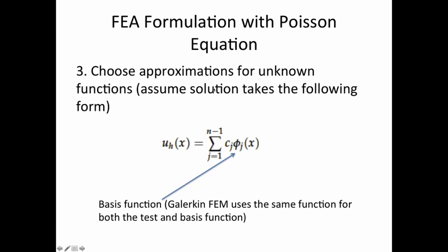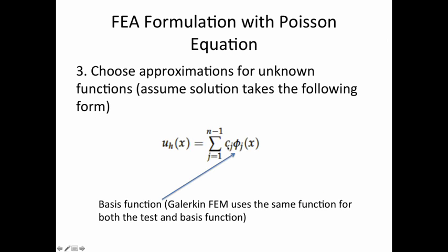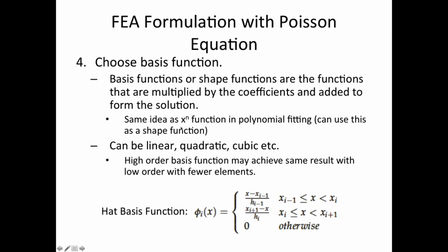For step four, you need to select the basis function. The basis function is a function multiplied by a coefficient and added to form the solution. The c's are the coefficients we're solving for, and the basis function is known once you select it. It's the same idea as x^n in polynomial fitting - it can be linear, quadratic, or cubic. Higher order basis functions can sometimes achieve the same results as low order with fewer elements.